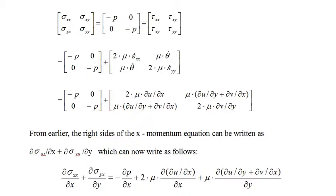Summarizing, we have the stress tensor partitioned into a pressure stress tensor and a deviatoric stress tensor. The second line shows the deviatoric stress tensor written in terms of strain rates, and the third line shows the deviatoric stress tensor written in terms of velocity gradients. From an earlier slide, the right-hand side of the x momentum equation equals the partial derivative of the x normal stress with respect to x plus the partial derivative of the yx shear stress with respect to y. Now we can write the right-hand side of the x momentum equation in terms of velocity gradients as shown.